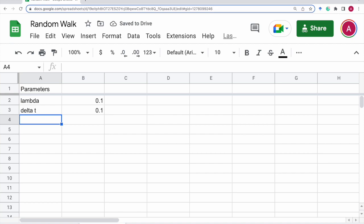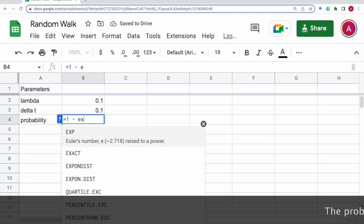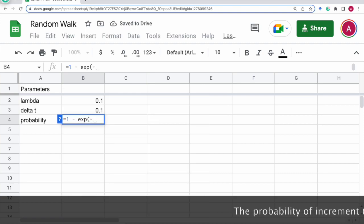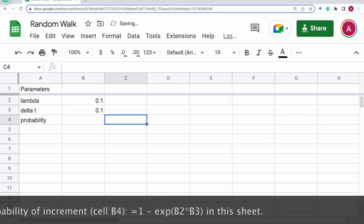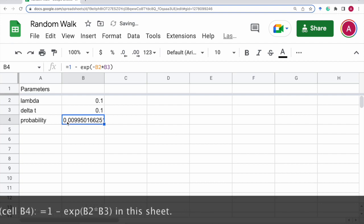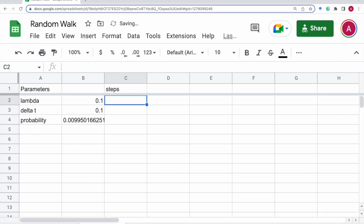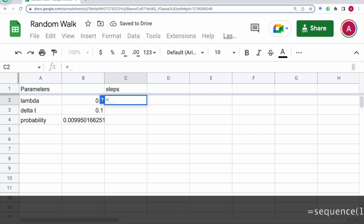And from these two parameters, we can determine the probability of increment. That is 1 minus exponential of negative lambda times delta t. So that would be this much. It's pretty small. Next, we just generate a sequence of integers from 1 to 1000.